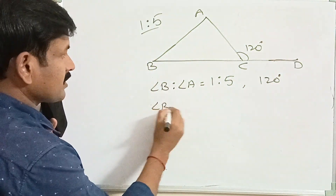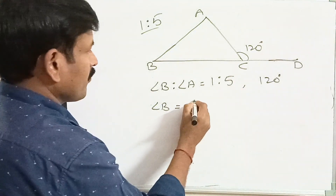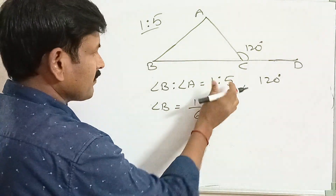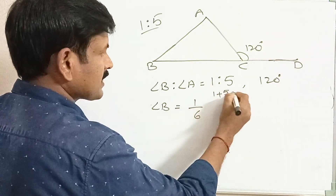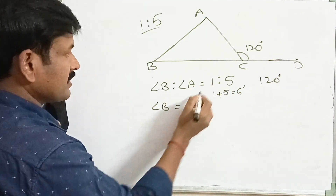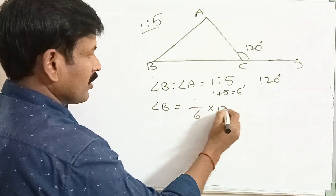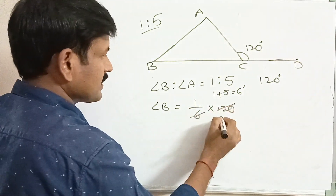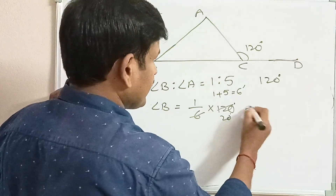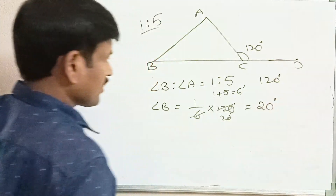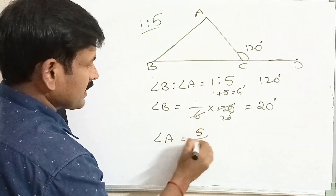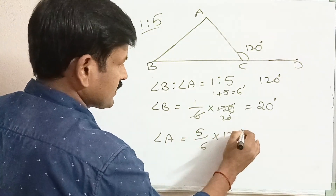The sum of the terms of the ratio is 1 plus 5, which equals 6. Angle B equals 1 by 6 into 120, which is 20 degrees. Angle A equals 5 by 6 into 120 degrees, which equals 100 degrees.